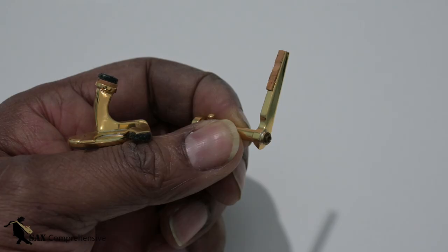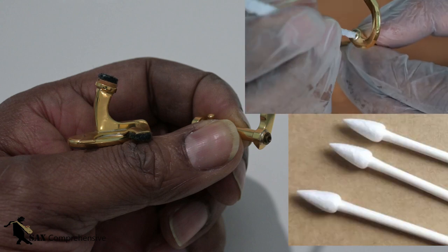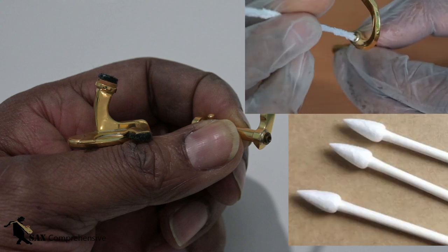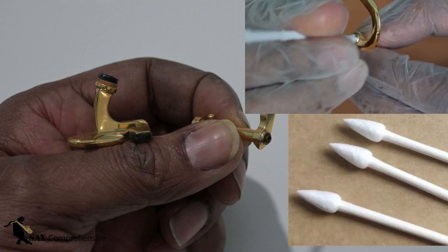If the keys are held by pivot screws, then use a small pointed Q-tip or cotton bud as the pipe cleaner may not do a good job in cleaning such a small hole.